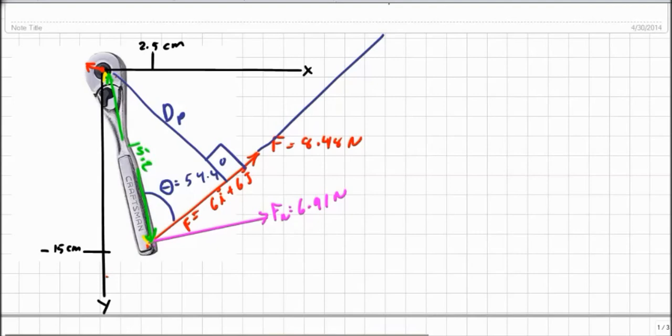And so the force times that, my force of 8.48 newtons times that perpendicular distance, that distance happens to work out to be 0.152 meters times the sine of our angle, which is sine 54.4. And that's equal to 0.124 meters. So if I do my force times my distance, my moment equals 8.48 newtons times 0.124 meters, and that's equal to 1.05 newton meters.